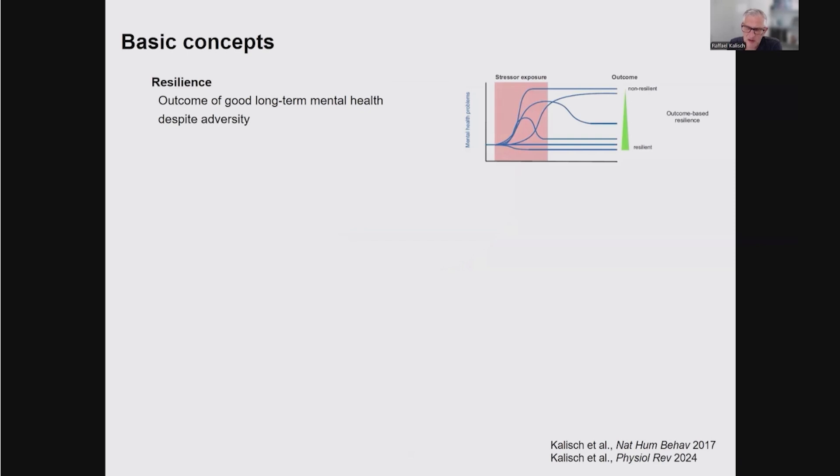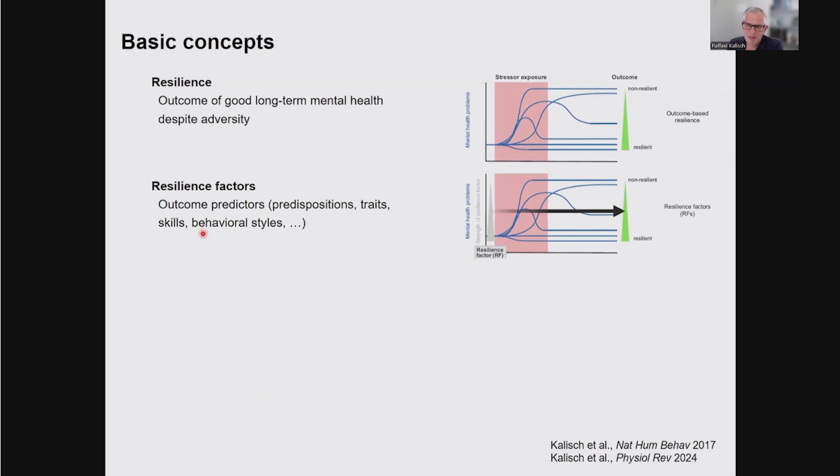What are the basic concepts that I'm using? In this review, we look at resilience as an outcome. That means you maintain your mental health in the long run, maybe have some quick impairment, but after some phase of stress exposure, you will be okay again, or you stably maintain your mental health. That would be the opposite of developing more or less severe problems in the aftermath of a stressful life phase or a very severe stressful event. So resilience is an outcome of good long-term mental health despite adversity.